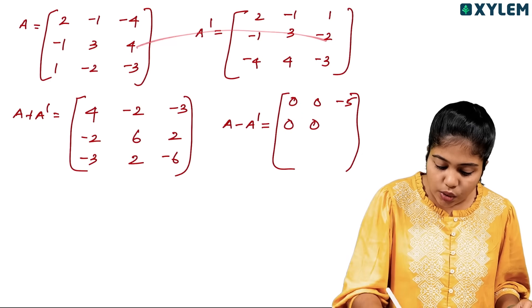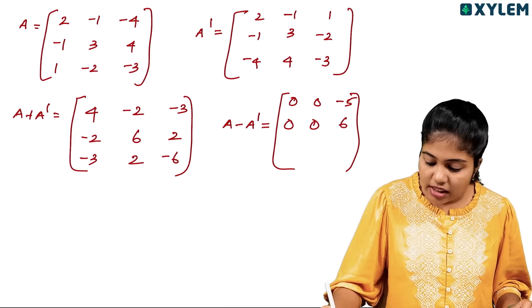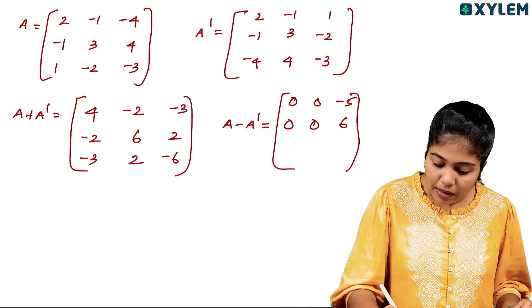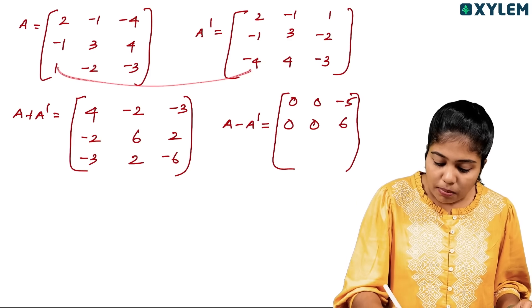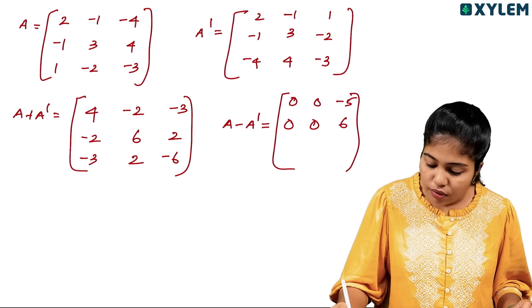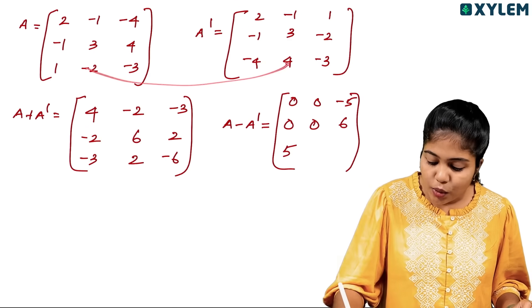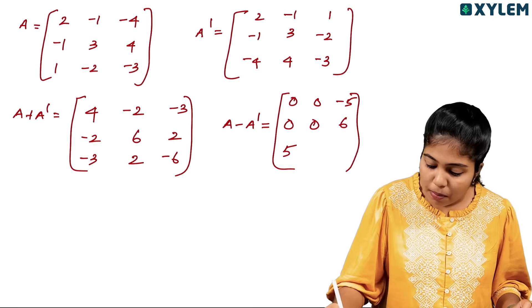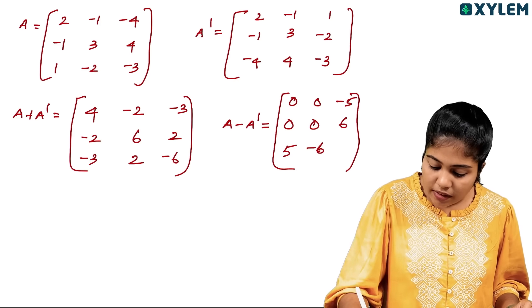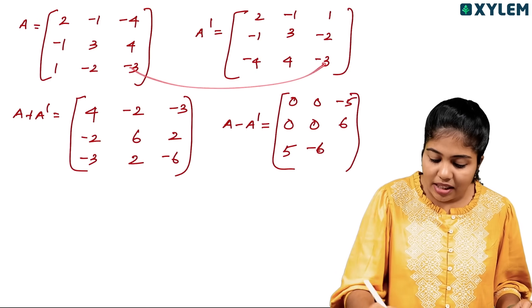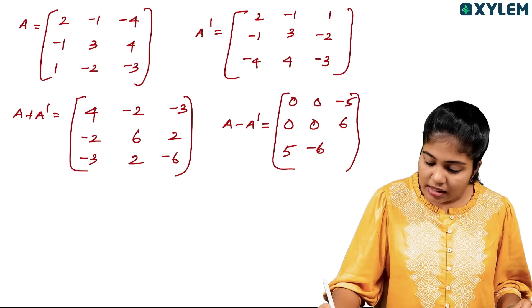The resulting elements are: minus 1 minus 4, 5, minus 2 minus 4 minus 6, then minus 3 minus 3 gives 0.